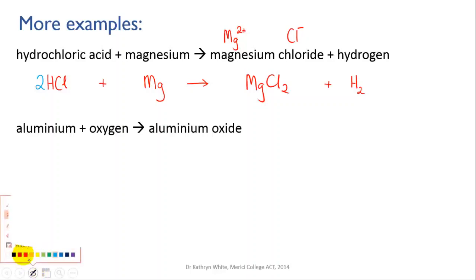Let's try the next one: aluminum plus oxygen goes to aluminum oxide. So aluminum is an element, symbol is Al. Oxygen is also an element and it's one of the diatomic seven, so it's going to be O2.